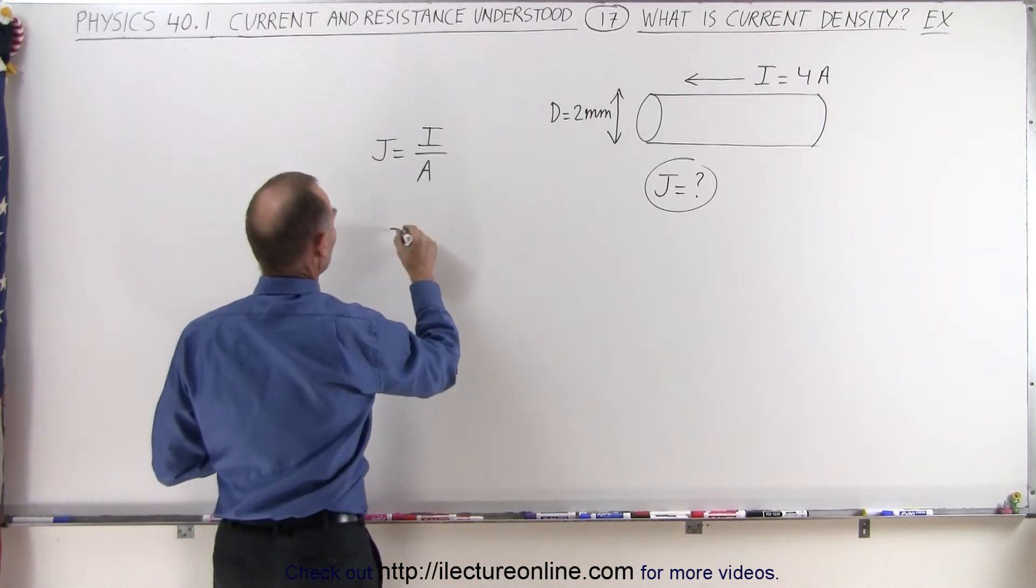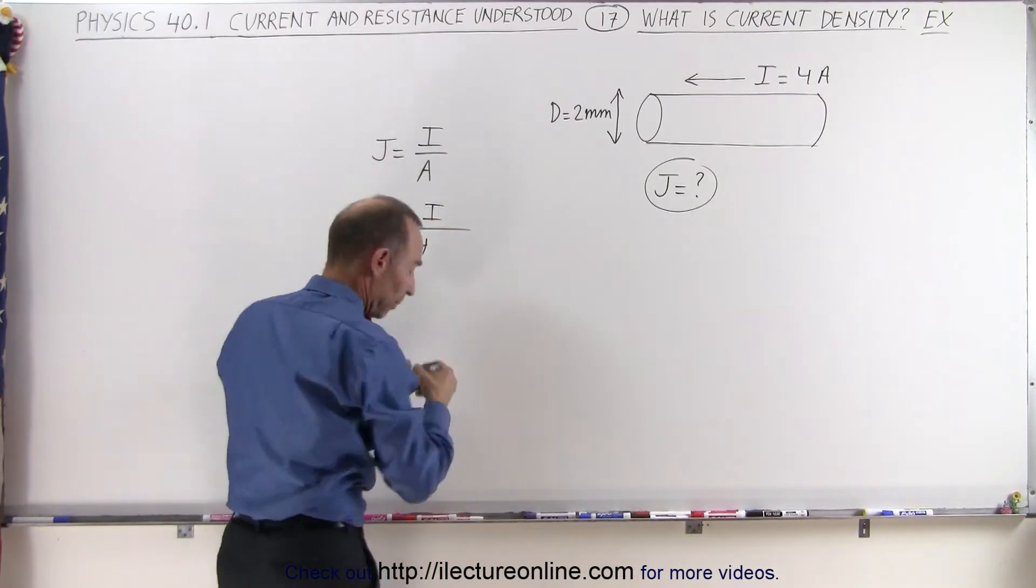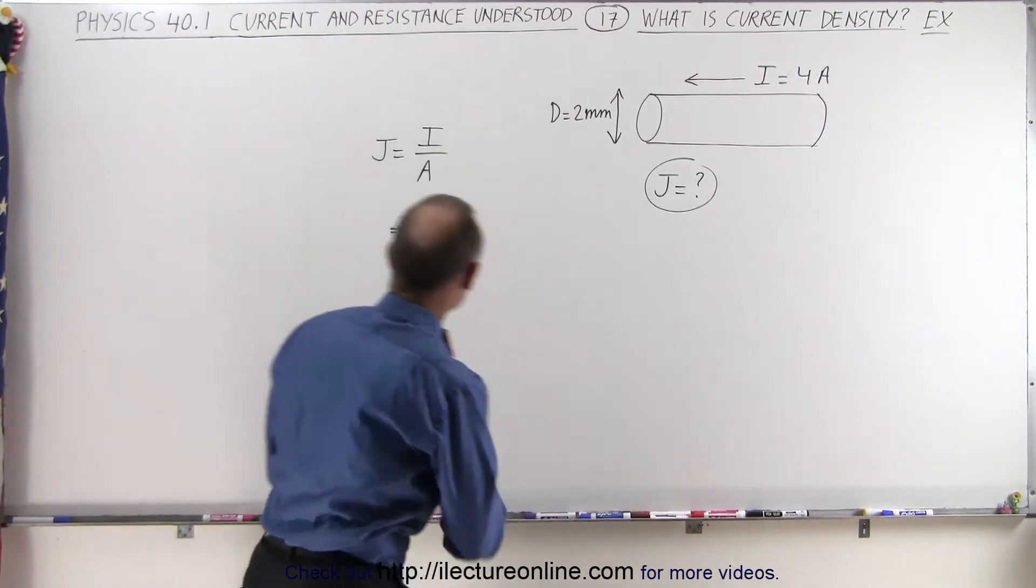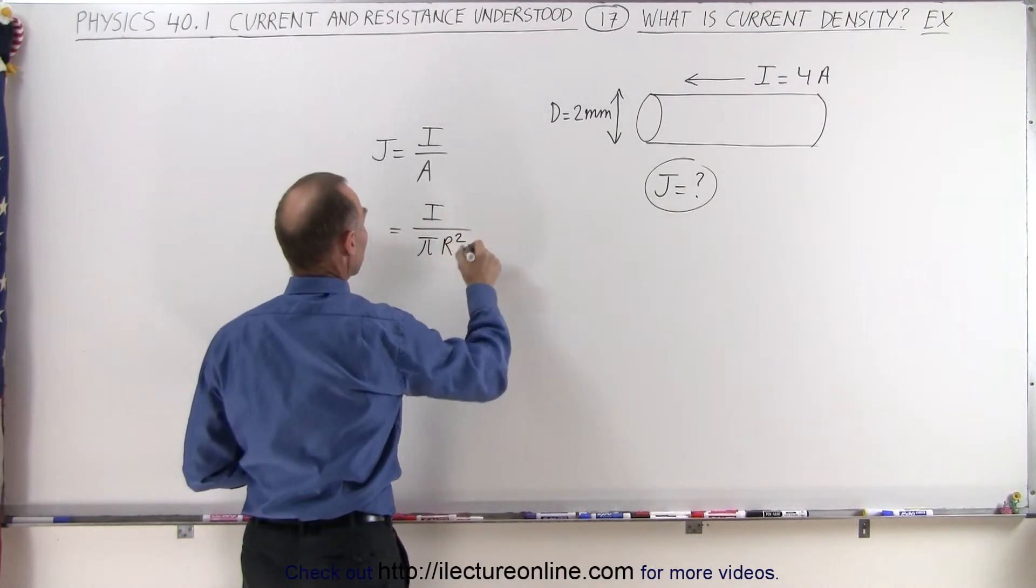In this case, that would be equal to I divided by A. No, not 4 pi because that's the surface area of a sphere. It simply would be pi r squared. So it would be pi times r squared.